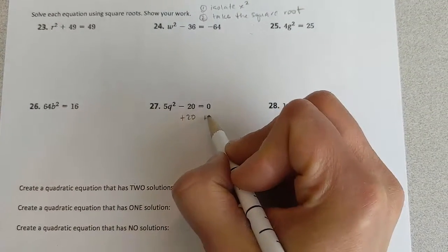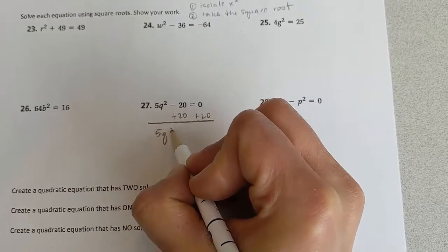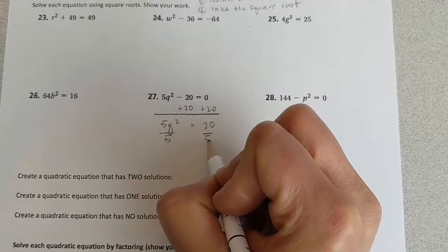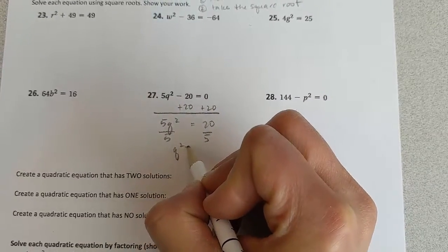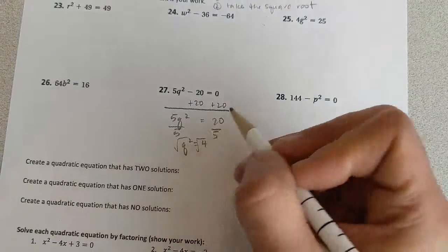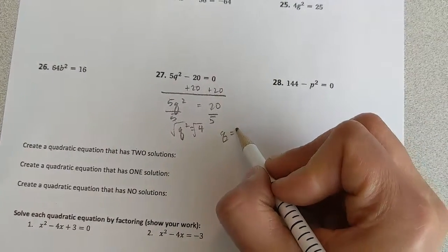I'm going to add 20 to both sides. So I've got 5q squared equals 20, divide both sides by 5, I've got q squared equals 4. If I take the square root of both sides,